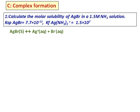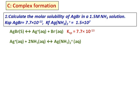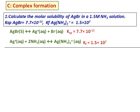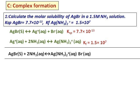Write down the first equation: AgBr(s) ionizes with its Ksp. Then write the complex formation equation with its formation constant Kf. Adding the two equations, the Ag⁺ cancels, giving AgBr reacting with ammonia to form the complex. When adding two equations, you multiply their equilibrium constants, giving a new K = 1.2 × 10⁻⁶.